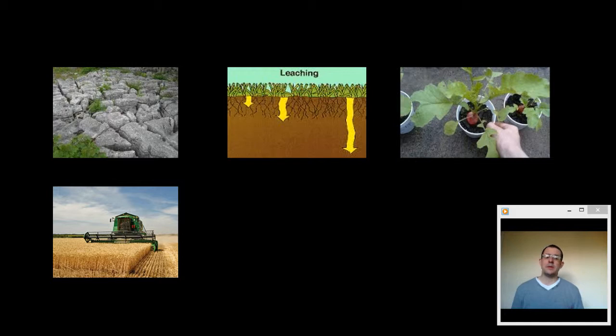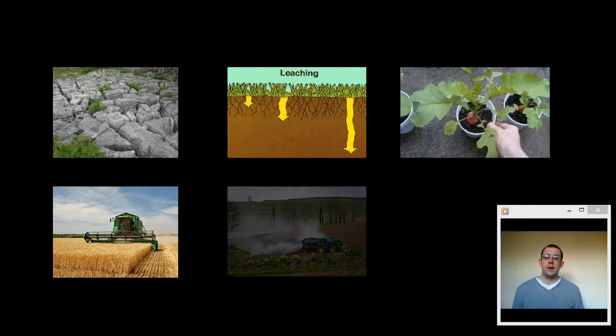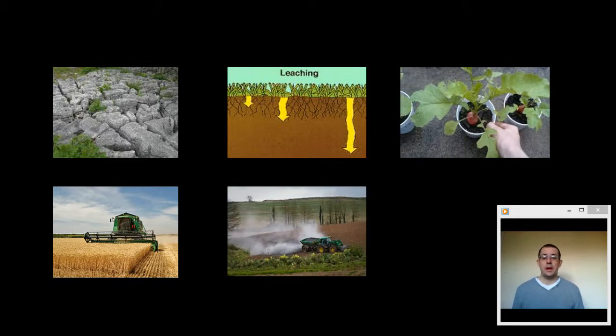There's other chemicals that we add to the soil as well. Sometimes, we add lime to the soil if it's particularly acidic to help neutralize that acid. Some insecticides and herbicides that we add can be alkaline or acidic, and by putting those on the soil, we change the pH.